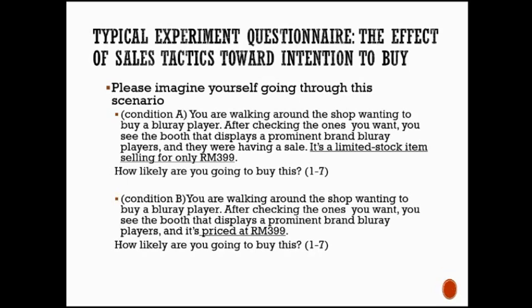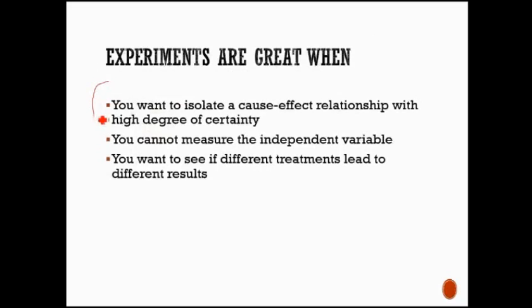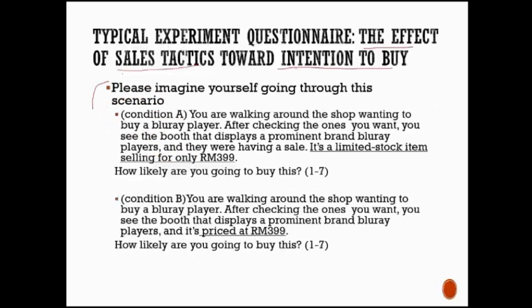But let's check out an example, straightforward, right? So this is a typical experiment questionnaire. It tries to investigate the effect of sales tactics towards consumers intended to buy. Okay, so in this experiment, the student or the experimenter will have two scenarios, we call them conditions A and condition B, and they will be presented to two different sample groups.